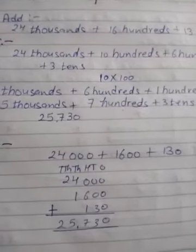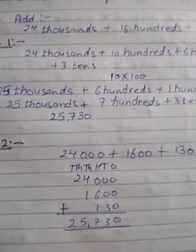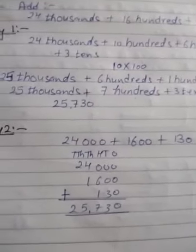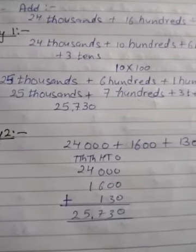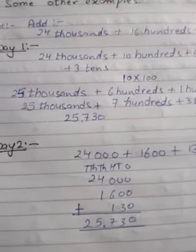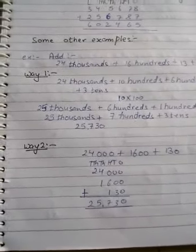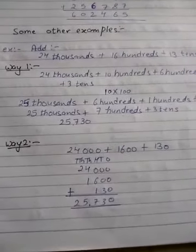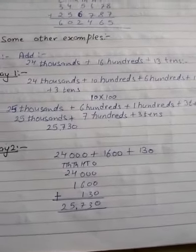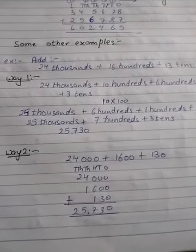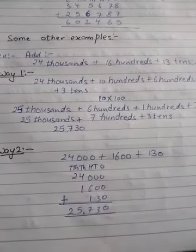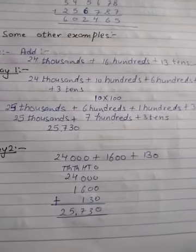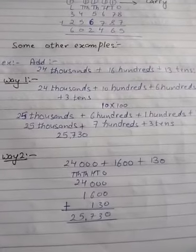Again write the place values: ones, tens, hundreds, thousands, ten thousands, and then add them up. Now you can match - the answer will always remain the same: 25,730. You can opt for the best way you find easier so that you can do it faster. That's why I've sorted it out in front of you both ways - way one and way two. Whatever way you are comfortable with, you can opt for.